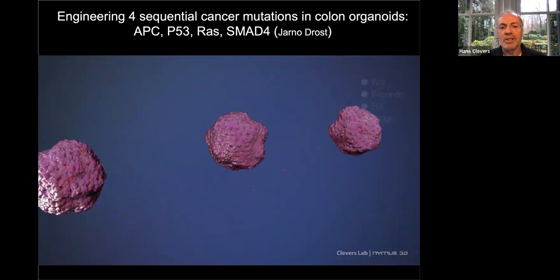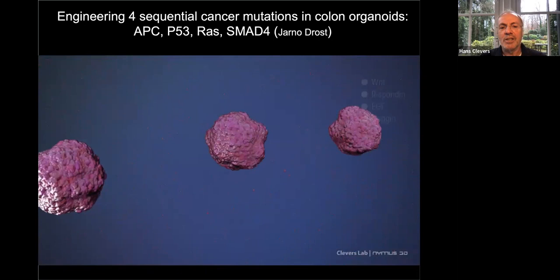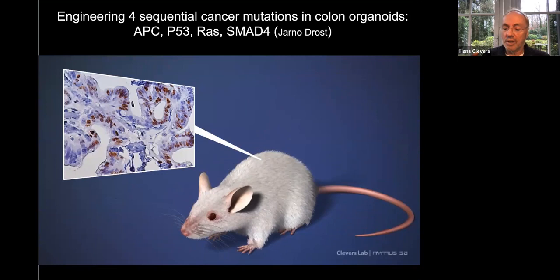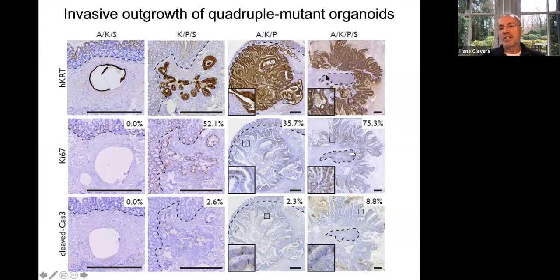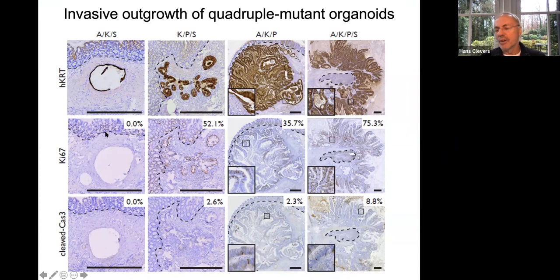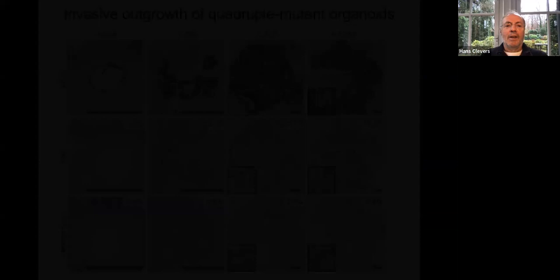This worked beautifully. We created a library of all different mutation combinations. These can be transplanted orthotopically into the colons of mice, and only the one with all four mutations gives invasive and metastasizing growth — rapidly metastasizing to the liver, as seen in humans. Combinations with fewer than four mutations score as adenomas or don't grow at all. This essentially confirmed the Vogelgram and made a beautiful link between the empirically defined growth factors for organoids and the mutations that cancer selects from the very same organ.